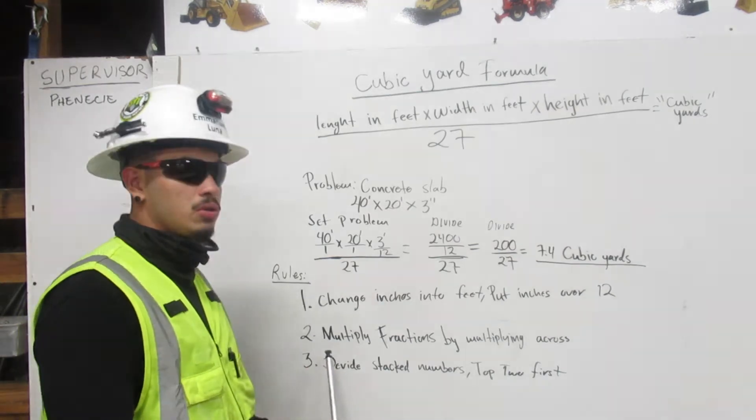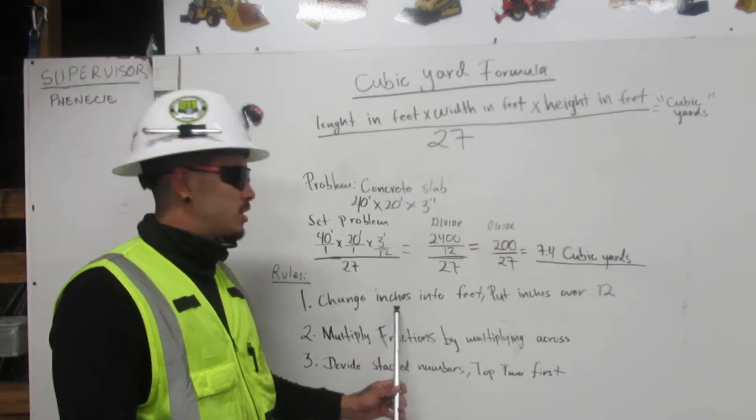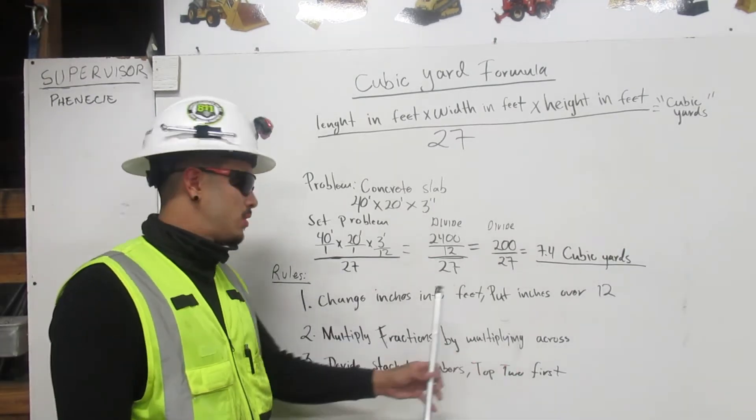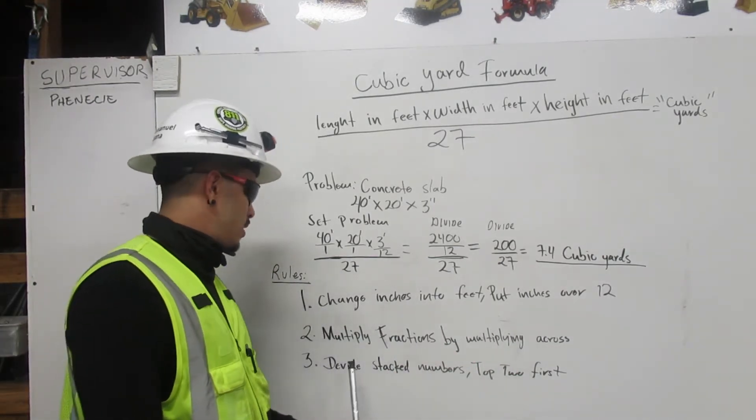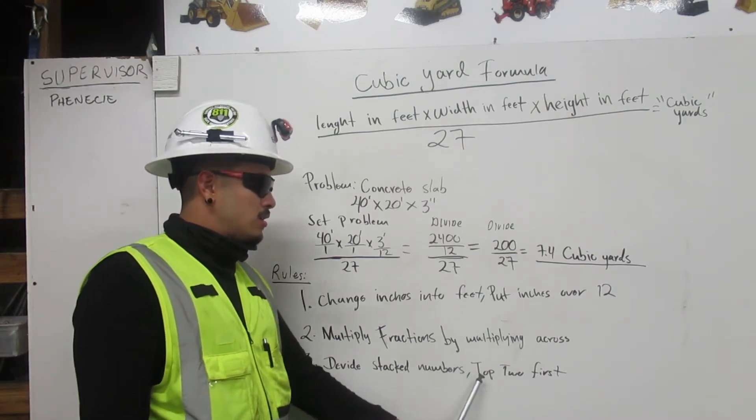These are the three basic rules. Number one, change inches into feet. Put inches over 12. Number two, multiply fractions by multiplying across. Number three, divide stack numbers, top two first.